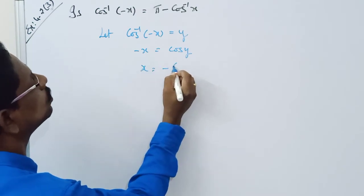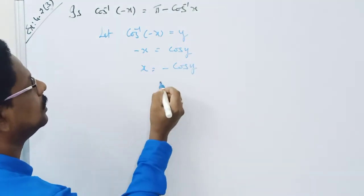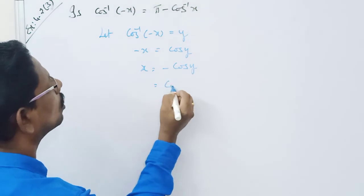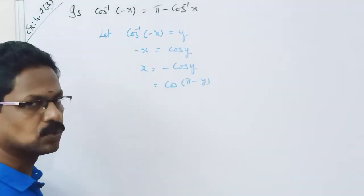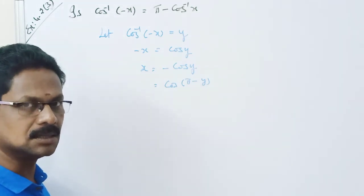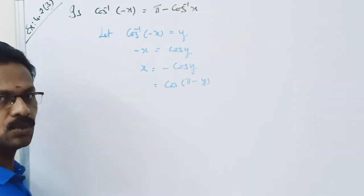x is equal to minus cos y. It is equal to cos of pi minus y. Cos of pi minus theta equals minus cos theta. So, cos pi minus y.